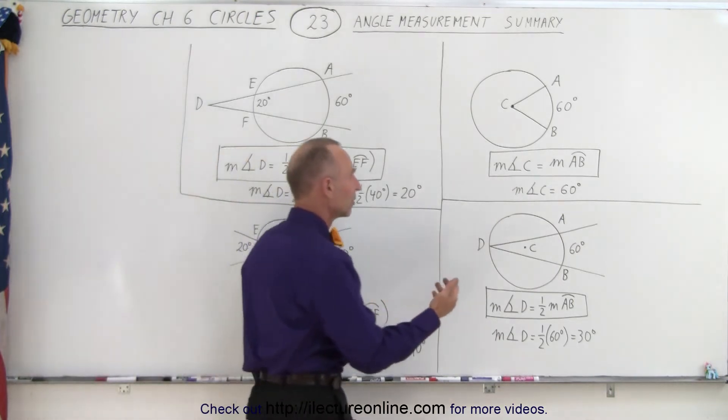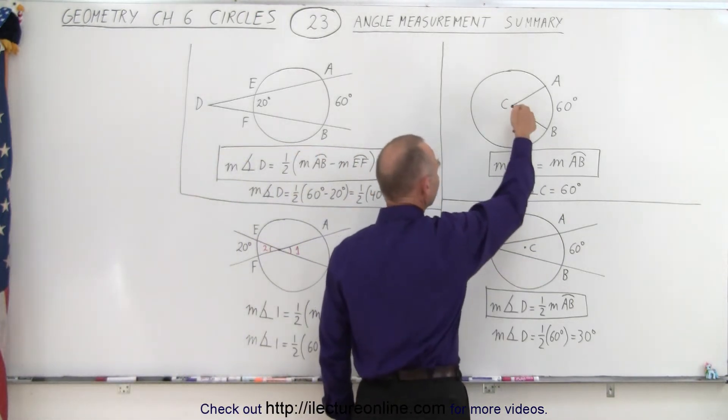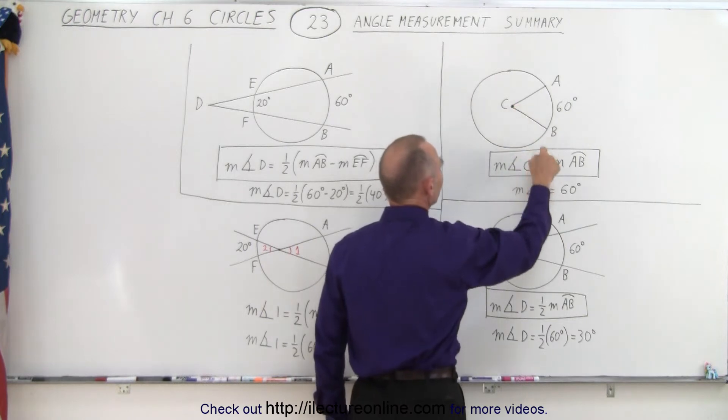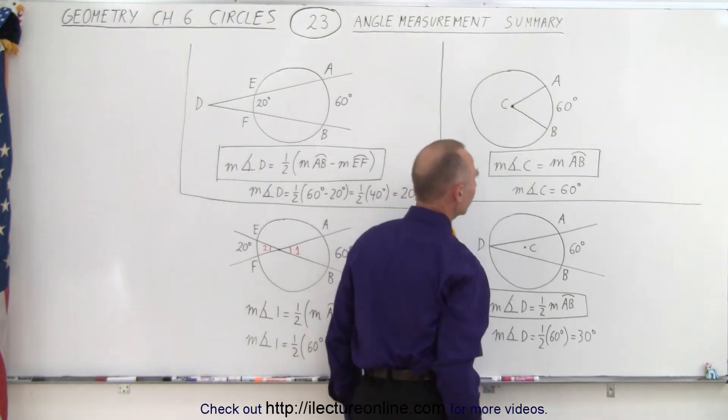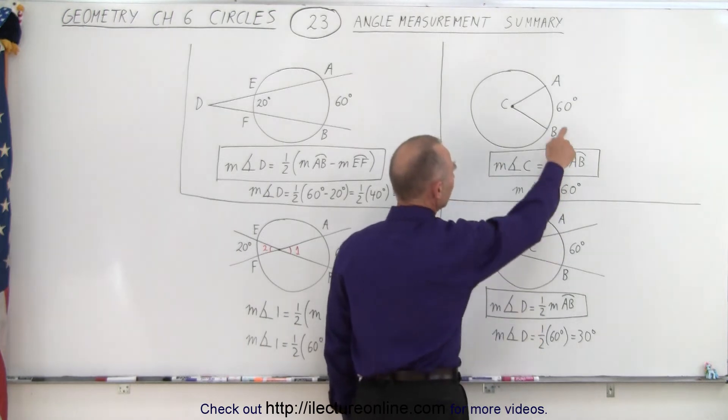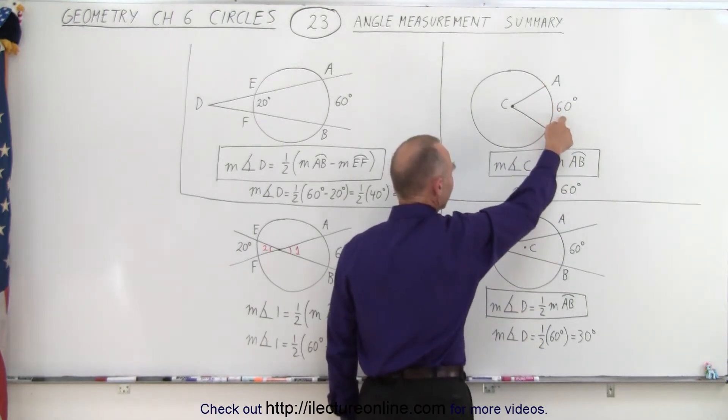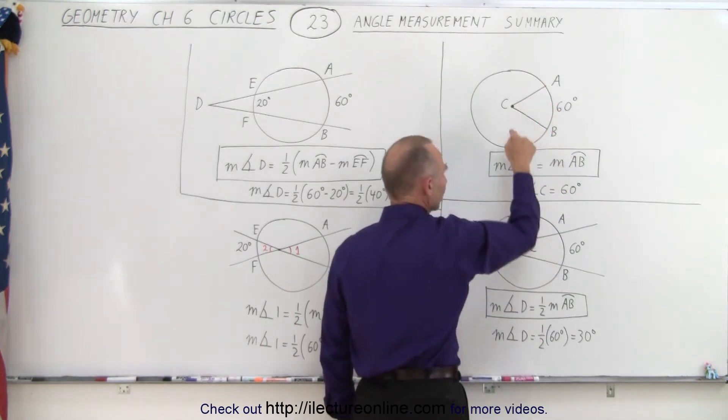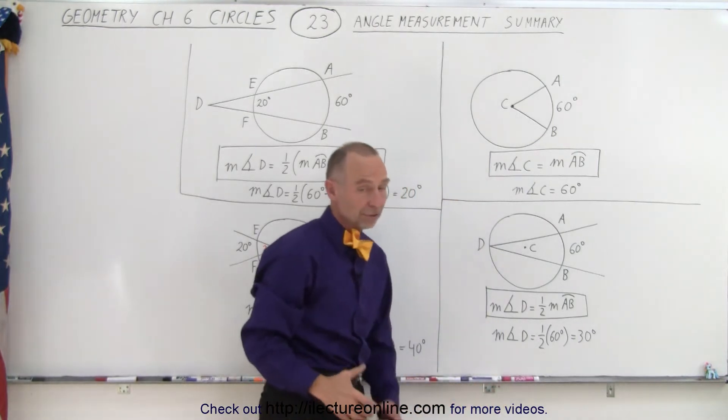So in the first case, it's fairly straightforward. The measure of the angle here, C, is equal to the measure of the arc that's been intersected. And so therefore, if the arc has an angle of 60 degrees, then that is also the measure of the angle. It's also 60 degrees. Pretty straightforward.